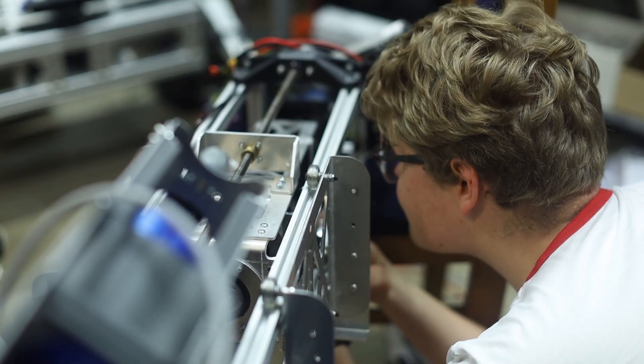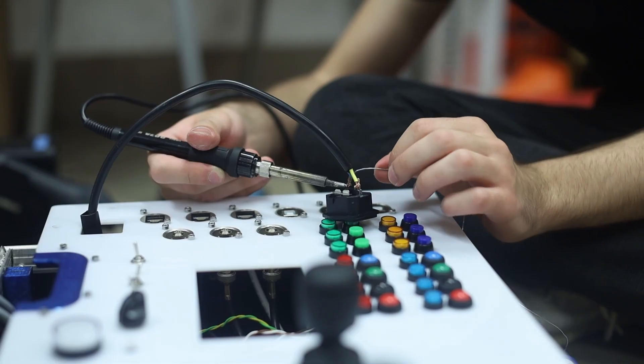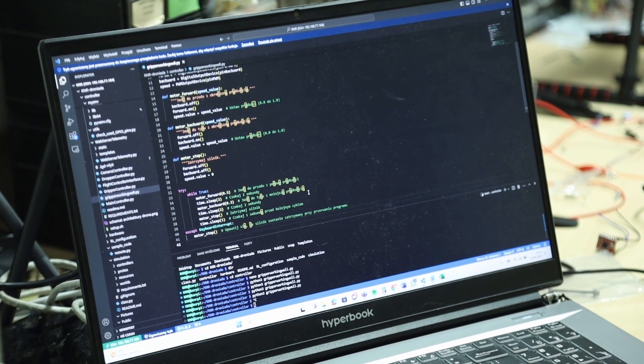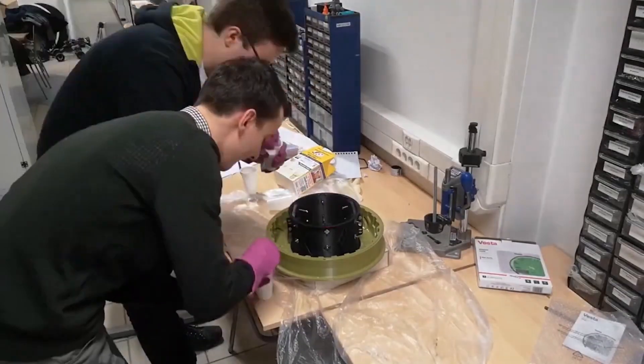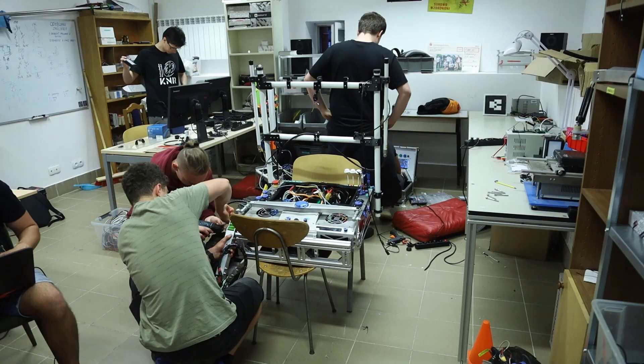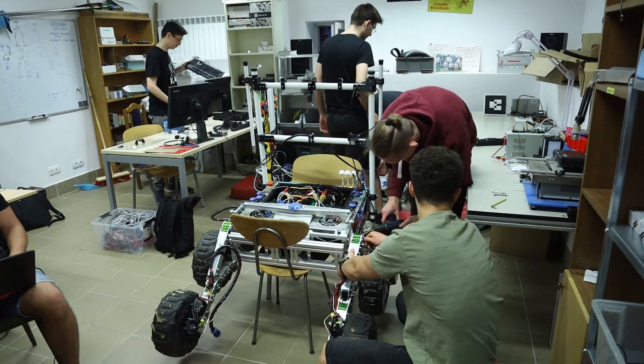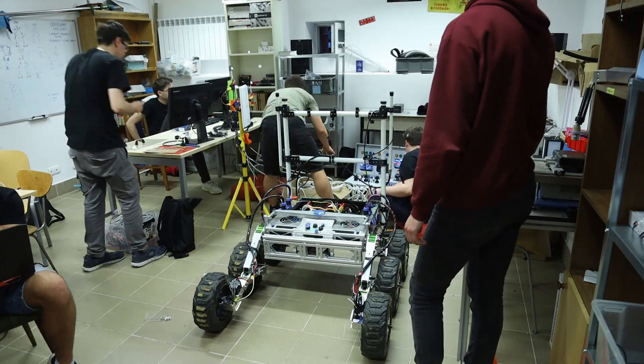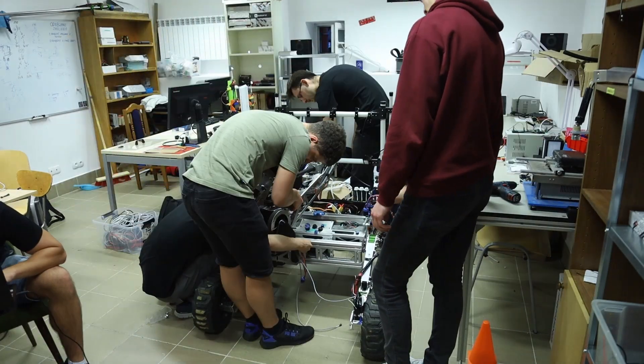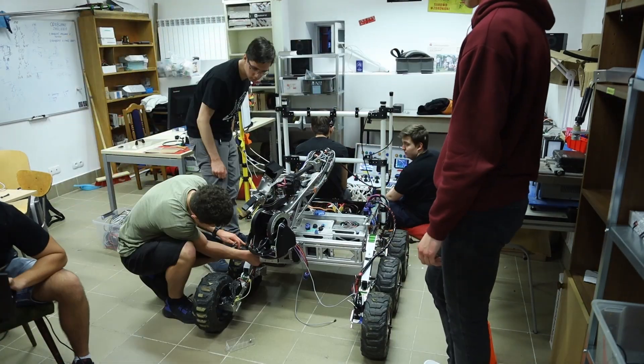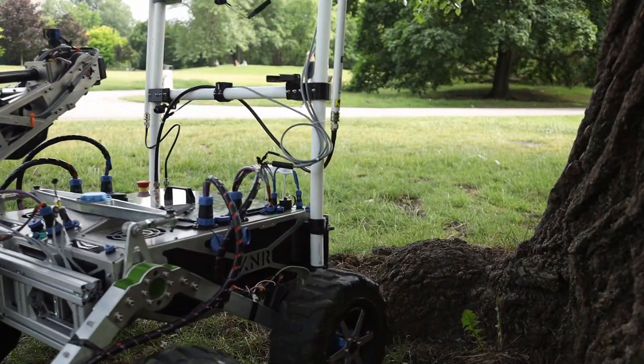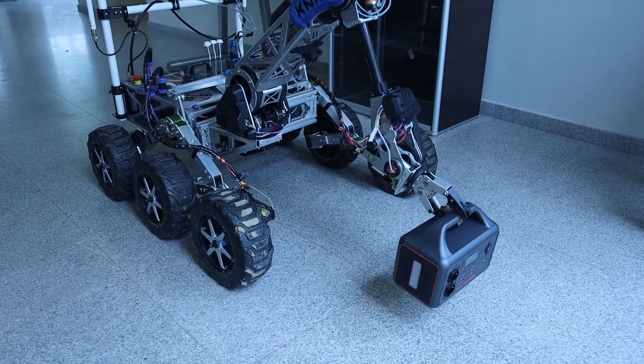Every component of the Rover, from mechanical parts to electronics and software, was meticulously crafted by our team members, showcasing our dedication to craftsmanship and innovation. With stability and modularity at the forefront of our design, our Rover features a universal rail at the front, enabling swift mounting of task-specific modules. Additionally, each component, from the suspension system to the manipulator, is crafted to handle the challenges of rough terrain and complex tasks.